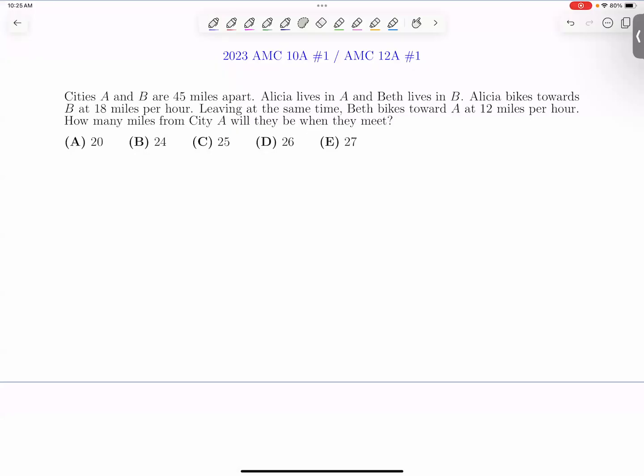Cities A and B are 45 miles apart. Alicia lives in A and Beth lives in B. Alicia bikes towards B at 18 miles per hour. Leaving at the same time, Beth bikes towards A at 12 miles per hour.